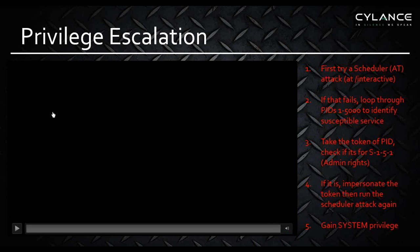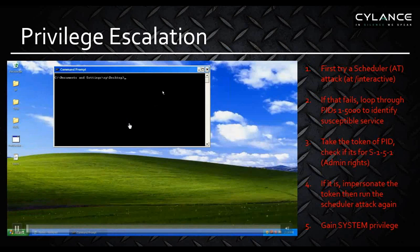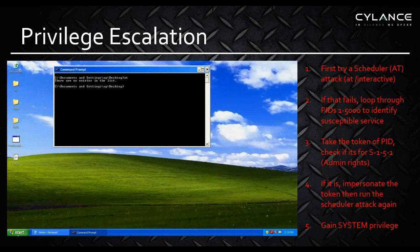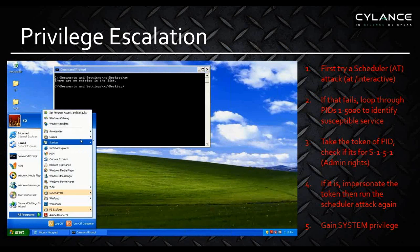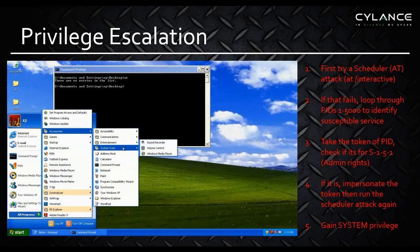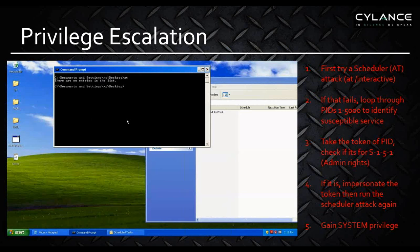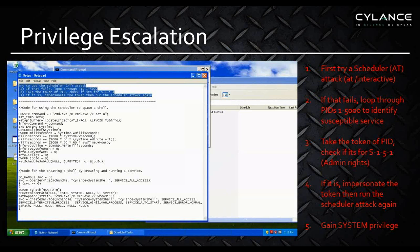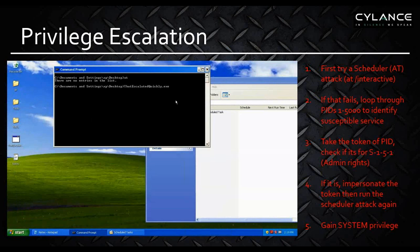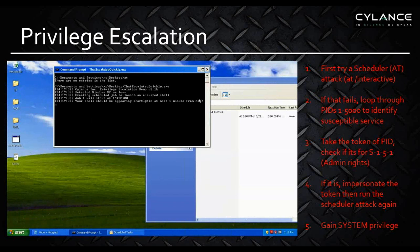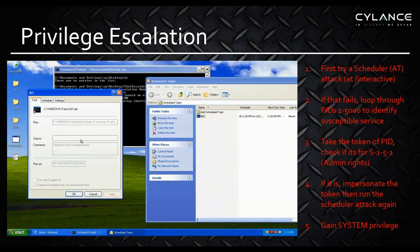For privilege escalation, we wrote a utility called 'escalate quickly' to demonstrate that even if you can't use an interactive return to generate an AT job for privilege escalation in Windows — to go from a user or admin to a system privilege, which is the super user privilege in Windows — there are other mechanisms. The utility uses two function calls: one is just an AT scheduler attack, very basic. If that fails, it'll loop through PIDs 1 to 5000 to find a service that isn't secured properly to the user, then borrow that token to generate the task and return, for our purposes, a command shell. We could have returned anything — a PSExec or a RAT — but we returned a command shell at the system privilege to demonstrate we can gain system interaction from a user profile.